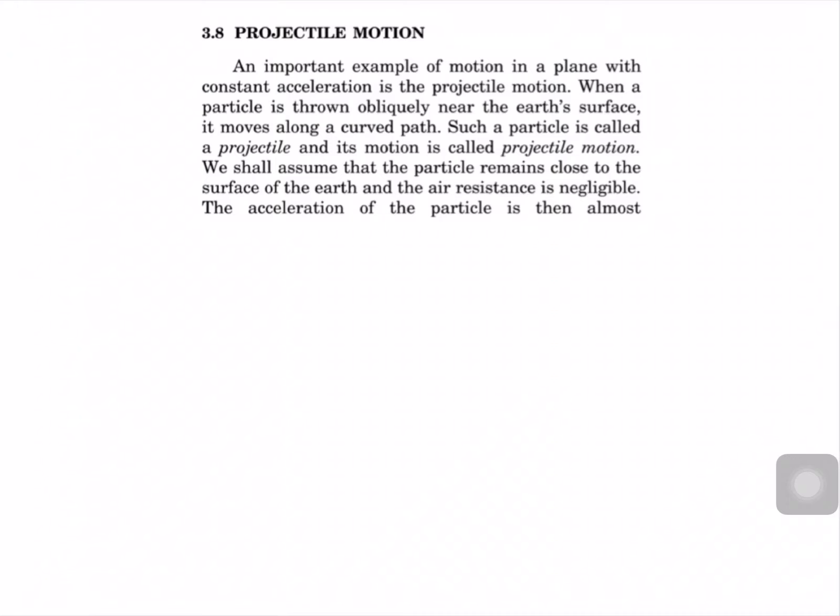What is a projectile? It is nothing but giving an initial velocity and then the body is allowed to move under gravity. When a particle is thrown obliquely near the surface, it moves along a curved path. Such a particle is called a projectile and its motion is called projectile motion.